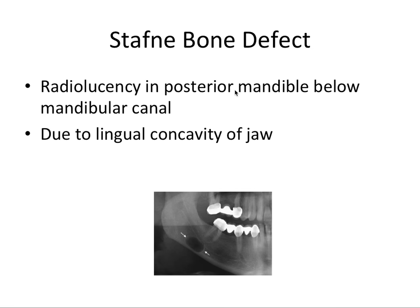Stafne bone defect seems to be a real favorite of test makers. It's a radiolucency in the posterior mandible below the mandibular canal, and it looks like it could be a cyst — it almost appears corticated on imaging, but it's not. It's due to the lingual concavity of the jaw being so severe that it appears on a panoramic X-ray. It seems like it should be investigated, but it's actually just a variation of normal anatomy.